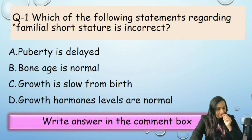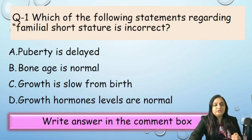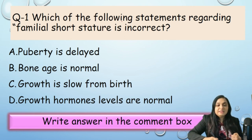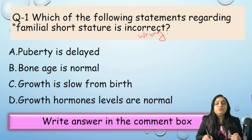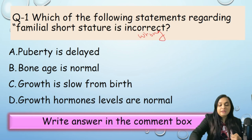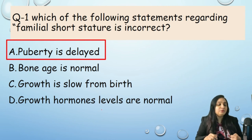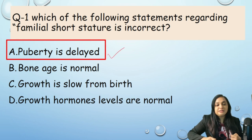Now it is trivia time — let us discuss a few multiple choice questions. Question 1: Which of the following statements regarding familial short stature is incorrect? Options: A) Puberty is delayed; B) Bone age is normal; C) Growth slows from birth; D) Growth hormone levels are normal. The correct answer is A — puberty is delayed is incorrect for FSS. In familial short stature, puberty is normal, bone age is normal, growth is slow from birth, and hormone levels are also normal.